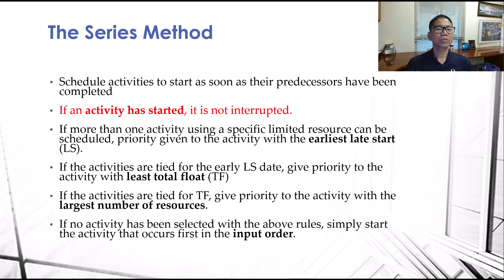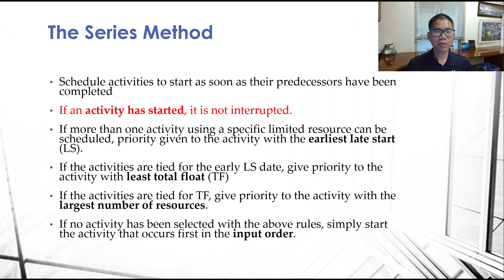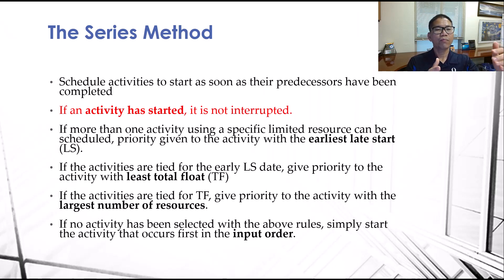If activities also tie with total float, give priority to the activity with the largest number of resources used. For example, if activity A requires three helpers and activity B requires five helpers, give priority to activity B because it uses more resources. If no activity has been selected based on the first five rules, simply go to input order — if A and B tie on all rules, go with A.